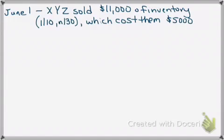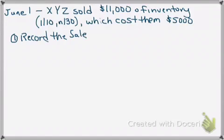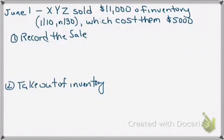With sales we have a little bit different items than we did with inventory purchases, because with a sale we have to actually do two different things. We have to record the sale, and the second thing is we have to take it out of inventory. So there will be two entries when we look at our sales journal entries under this perpetual inventory system — remember we are looking at perpetual, not periodic.